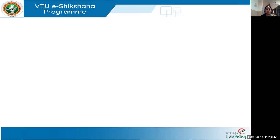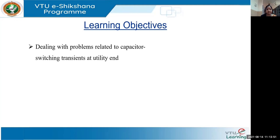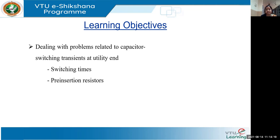In the last lecture, we talked about how high power frequencies create problems and what the solutions are for such high-frequency surge currents. I mentioned that transients or voltages occurring at the low or medium level due to transient switching will be covered in today's lecture. We will be studying the problems related to capacitor switching transients at the utility end and seeing the importance of switching times and different methods to suppress these transients.